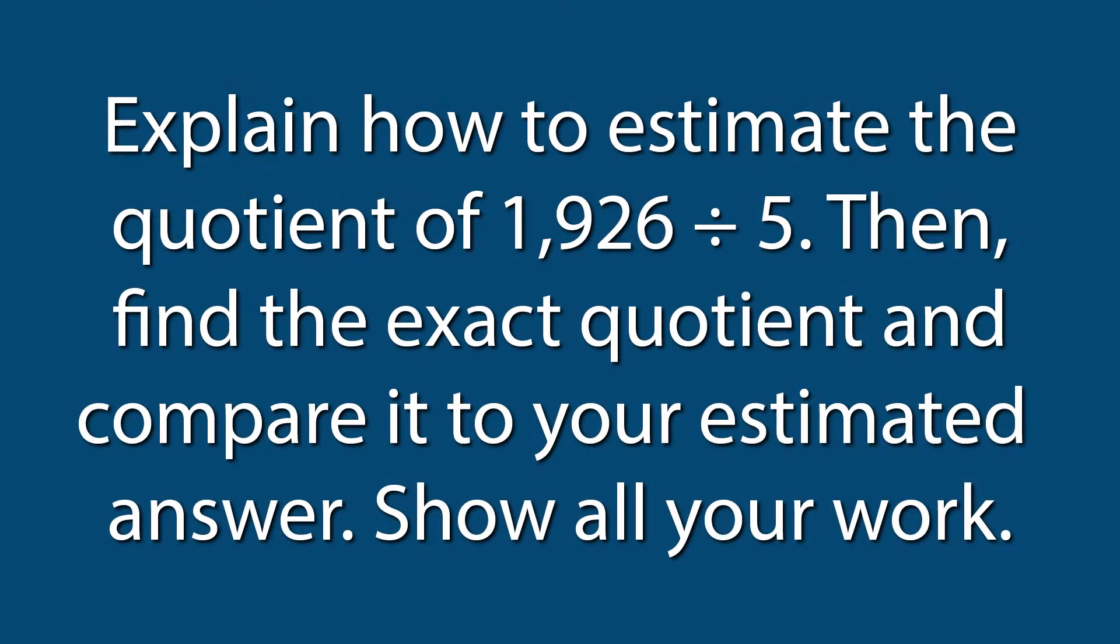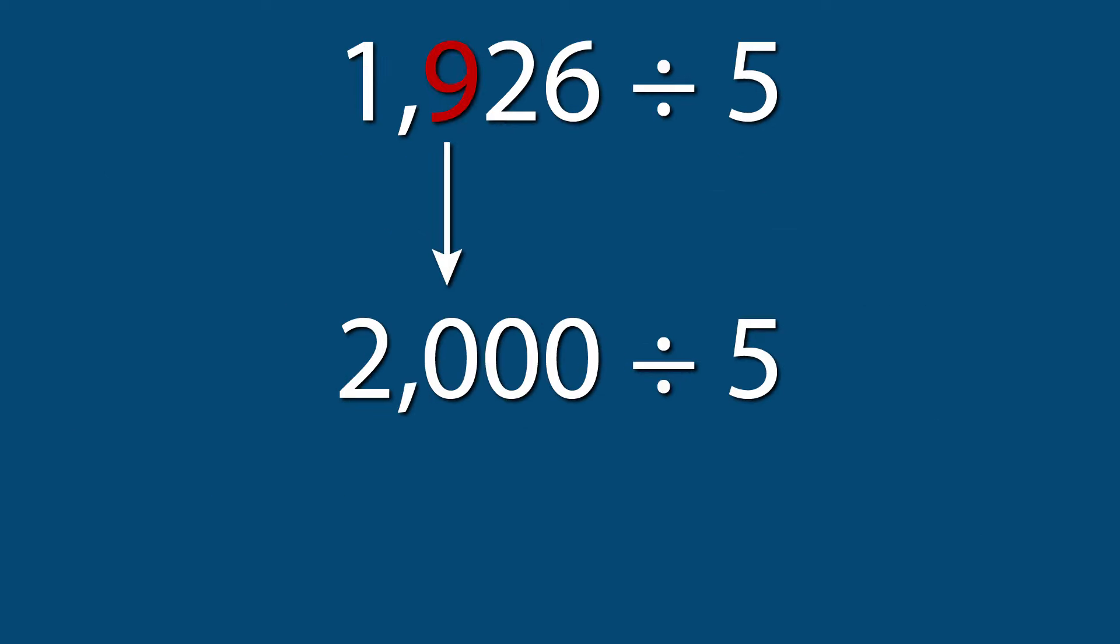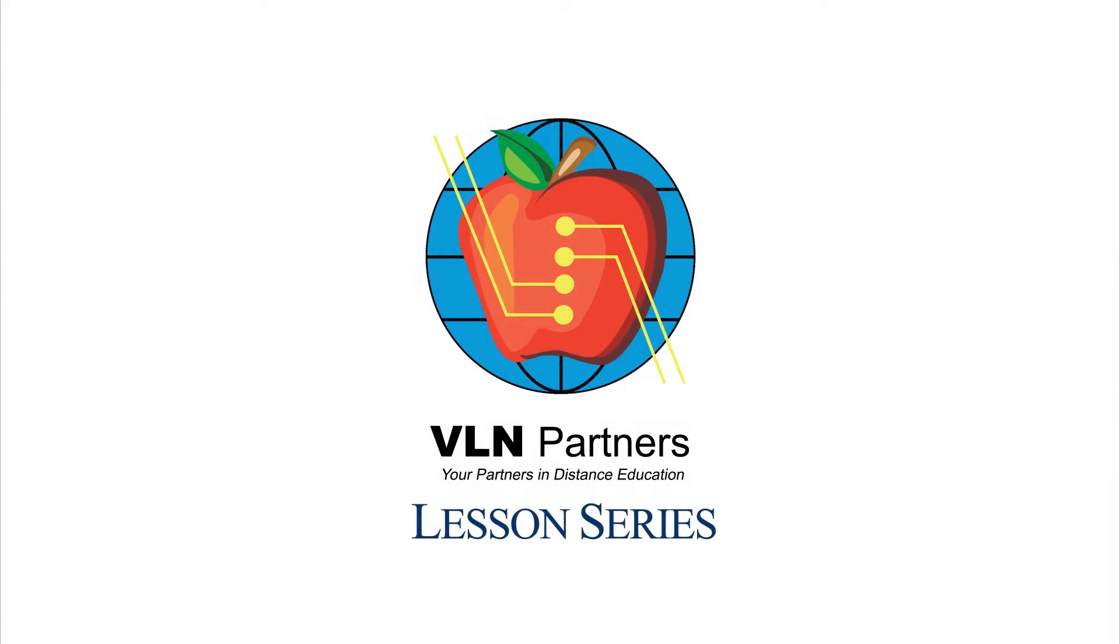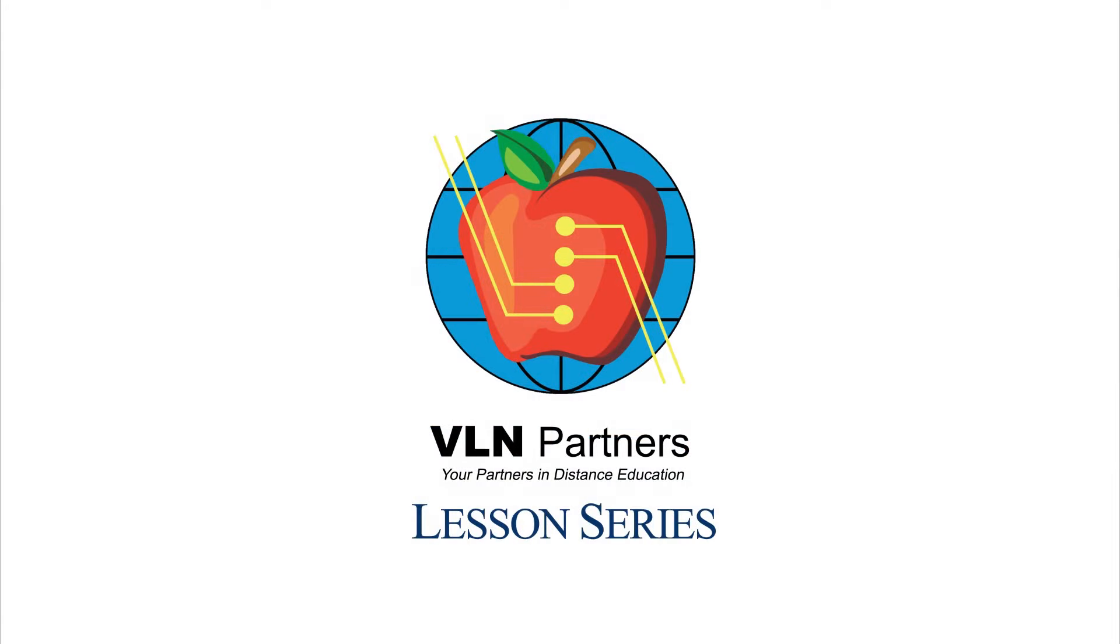For the question that asks: explain how to estimate the quotient of 1,926 divided by 5, then find the exact quotient and compare it to your estimated answer, show all of your work. The quotient can be estimated by rounding 1,926 up to 2,000 and dividing by 5. The estimated answer is 400 and the real answer is 385 remainder 1. For more information on this topic, contact your teacher.